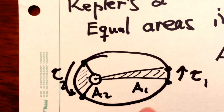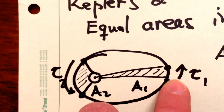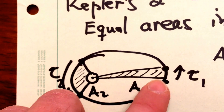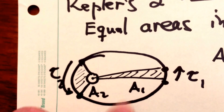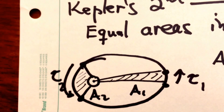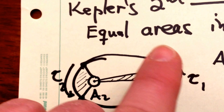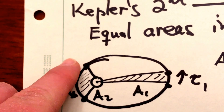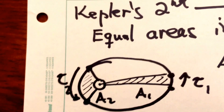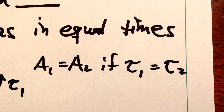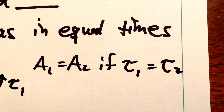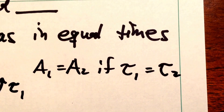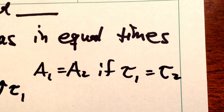If we imagine there's some amount of time tau 1 during which the planet is over here in its orbit, a vector pointing from the sun to the planet sweeps out an area A1 in that time tau 1. If we wait about half an orbit later, the planet makes it around to this side of its orbit, and the same radius vector sweeps out an area A2 in an amount of time tau 2. Kepler's second law says that if tau 1 and tau 2 are equal, then the area swept out by the radius vector during those two times is going to be exactly equal.